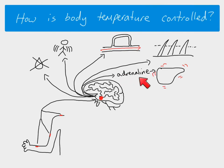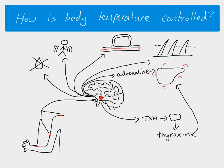Adrenaline is released if there's a fairly rapid decrease in body temperature. If there's a more gradual decrease — for example in countries which have a winter season — as it gets colder, the hypothalamus releases a different hormone called TSH. TSH stimulates the thyroid gland to release a hormone called thyroxine, which also acts on the liver to increase the metabolic rate. This is a more long-term response that would only stop when the external temperature starts to increase again, moving out of winter towards spring and summer.